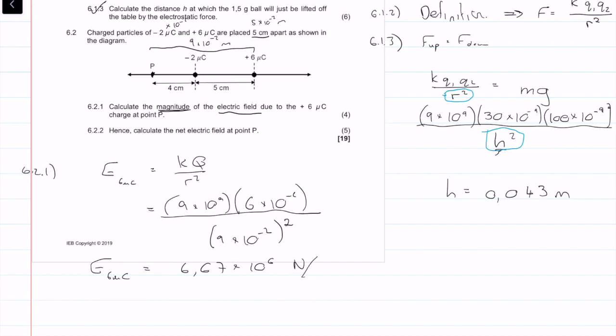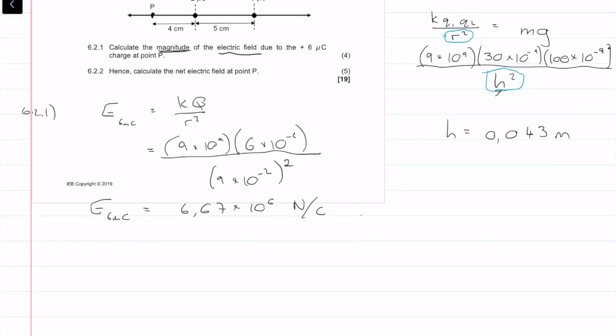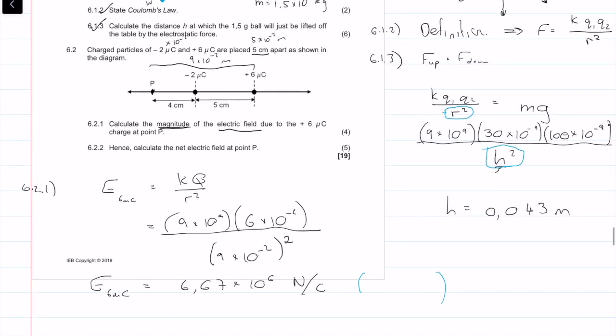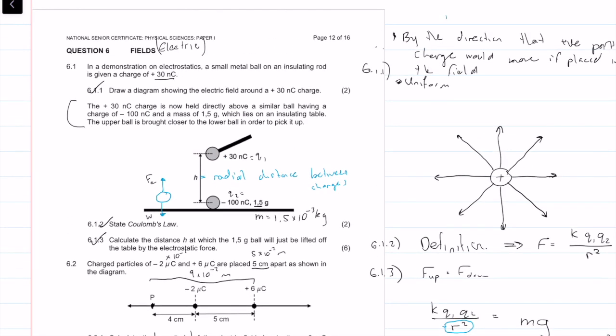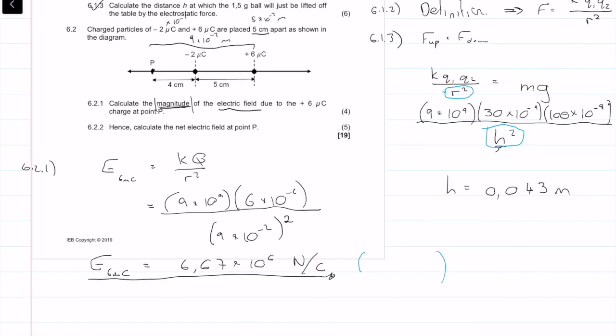That comes out as, the electric field due to the 6 nanocoulomb charge is equal to 6.67 times 10 to the 6 newtons per coulomb. I'm just going to put the direction in because I might need it later, but this is the final answer. You don't need to put a direction in because it only asks for the magnitude. This electric field is acting leftwards. Again, through our definition, it's defined by a positive point charge so it's going to act left.